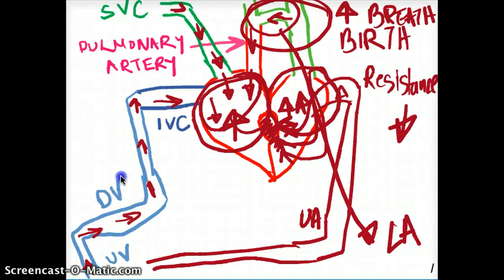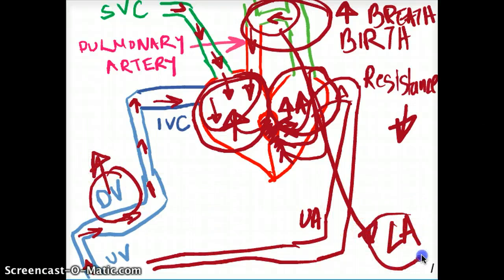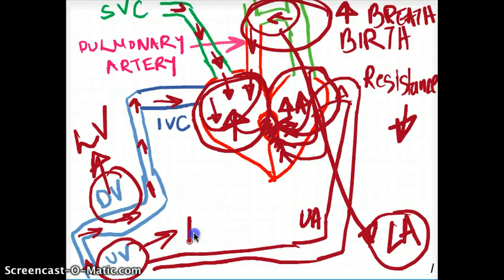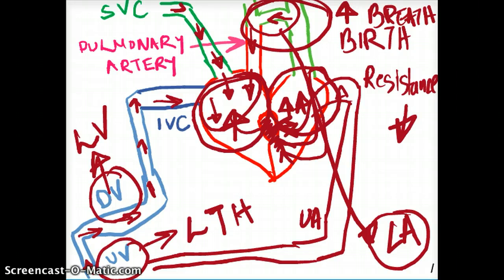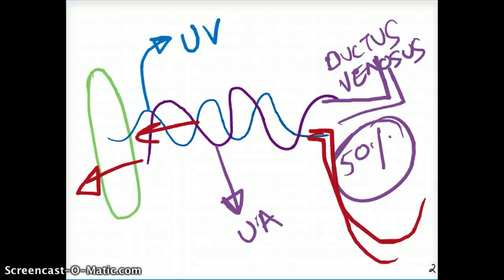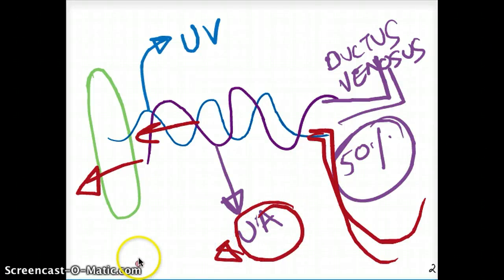The ductus venosus is going to be called the ligamentum venosum — just as the ductus arteriosus becomes the ligamentum arteriosum. The umbilical vein is going to be called the ligamentum teres hepatis. And the umbilical artery is going to be called the medial umbilical ligament.